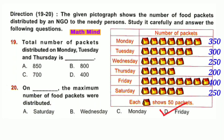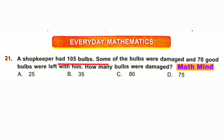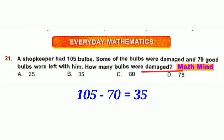Everyday Mathematics. Question number 21: A shopkeeper had 105 balls. Some balls were damaged and 70 good balls were left. How many balls were damaged? Total balls: 105. Good balls: 70. Damaged balls: 105 − 70 = 35. Option B is correct: 35.